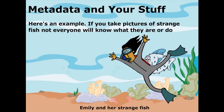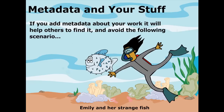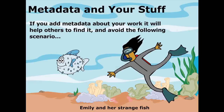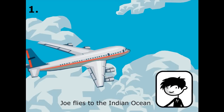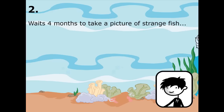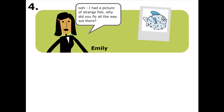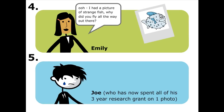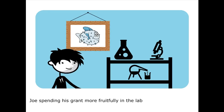Here's an example. If you take pictures of strange fish, not everyone will know what they are or do. This is Emily swimming in the ocean, where she discovered her strange fish. If you add metadata about your work, it will help others to find it and avoid the following scenario. Joe flies to the Indian Ocean. He waits four months to take a photograph of a strange fish, one that he's never seen before. Joe flies home with his picture. When Joe sees Emily, she tells him that she already has a photograph of the strange fish. Joe is dismayed. He has spent his whole research grant getting something that he could have found on the web, if only he'd known that the fish in Emily's photograph was the one he was looking for.